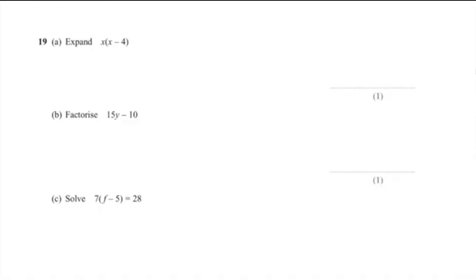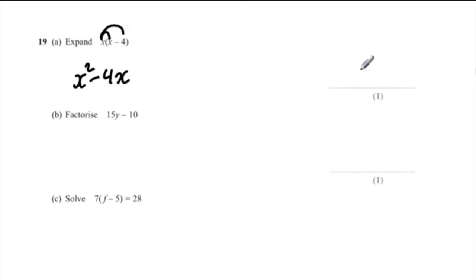Question 19A: expand x(x − 4). Multiply x by x to get x squared, then multiply x by negative 4 to get negative 4x. Final answer: x² − 4x.